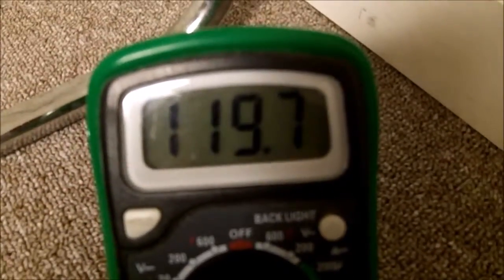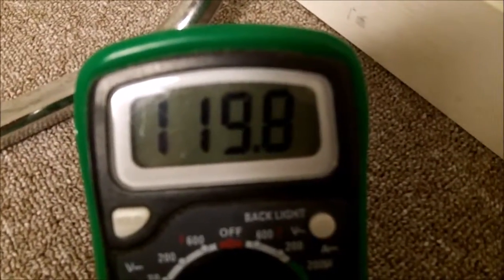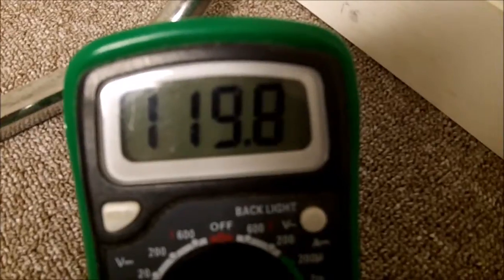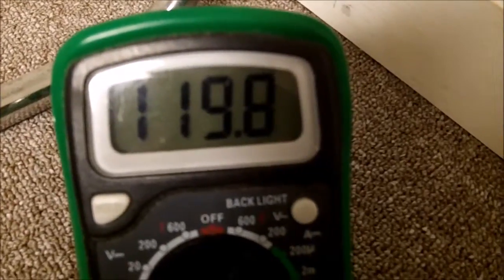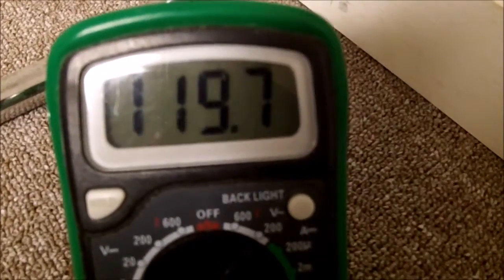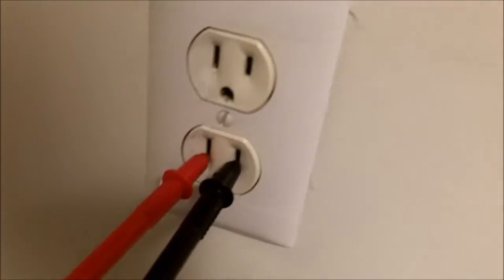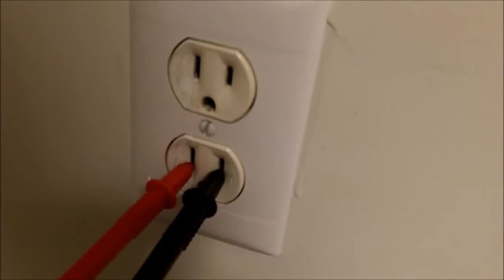As you can see on the meter it reads almost about 120 volts AC, which is what we would expect it to be. So that's the way that you check your voltage on a wall outlet with your multimeter.